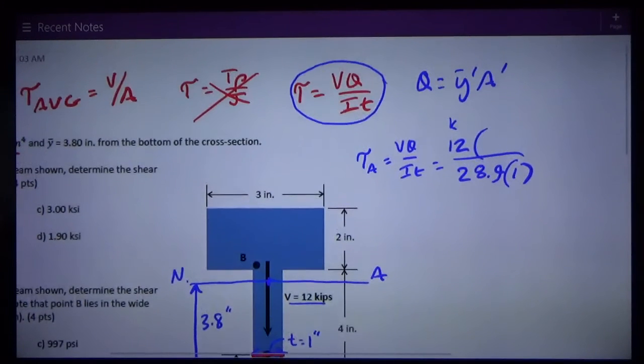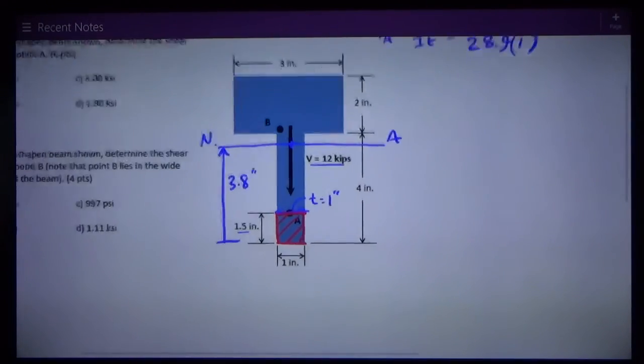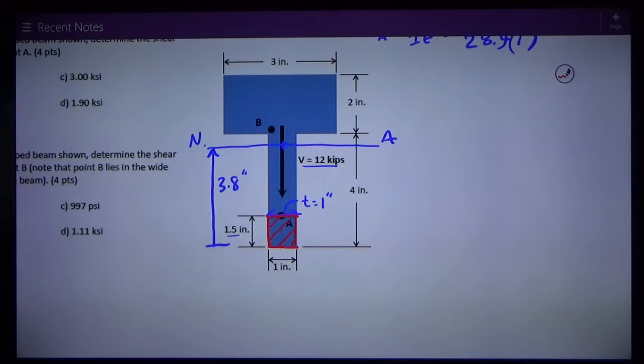Y bar prime, this number here, is the distance from the neutral axis to the centroid of A prime. Okay, so the centroid of A prime is a little rectangle. It's right there in the center of it. So therefore, the distance from that point to the neutral axis is Y bar prime.